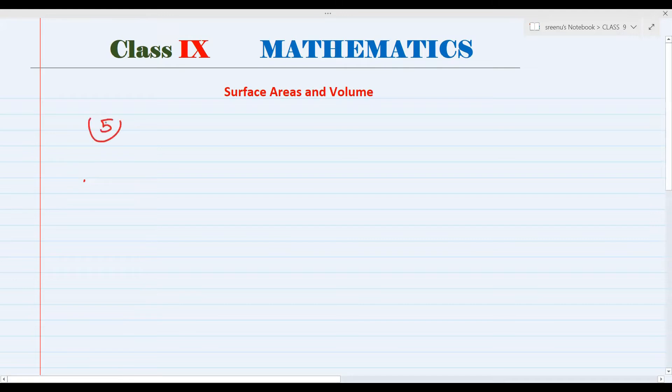5th question, actually what is it, lateral surface area of triangular prism or whatever it is, is the area of the base into height. Not area, it's perimeter, sorry. It's perimeter of the base into height.